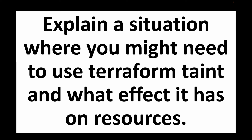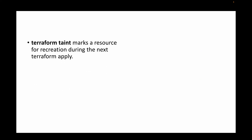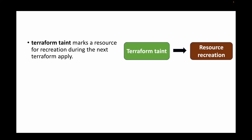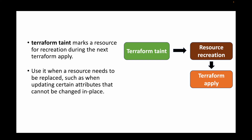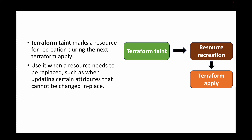The next question is: explain a situation where you might need to use 'terraform taint' and what effect it has on resources. Terraform taint is used when you want to destroy and recreate a resource — for example, if an EC2 instance is corrupted and you want to replace it. You mark the resource as tainted, and the next time you run 'terraform apply', Terraform knows to replace it with a fresh resource. Use it when a resource needs to be replaced, such as when upgrading attributes that cannot be changed in place.